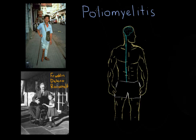Polyomyelitis, also known as polio, is caused by the poliovirus. The poliovirus causes a debilitating muscle disorder, and this is caused by damaging neurons that extend from the central nervous system.